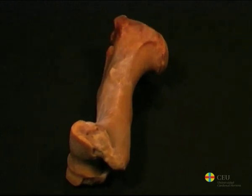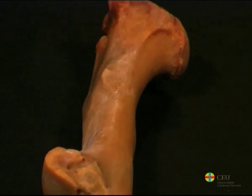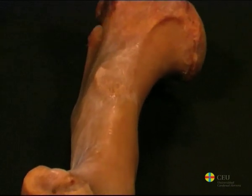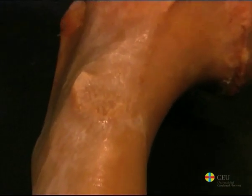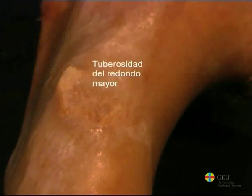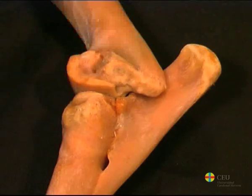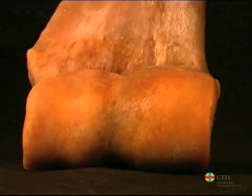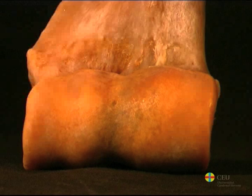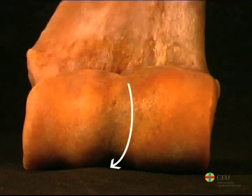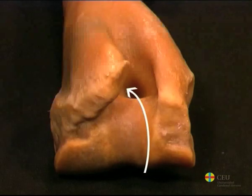Located on the medial surface of the humeral shaft is the teres major tuberosity, where the teres major and latissimus dorsi insert. The humeral trochlea, which is at the distal extremity, articulates with the radius and the ulna. It has a groove in its centre that continues caudally and forms a deep hollow, the olecranon fossa.